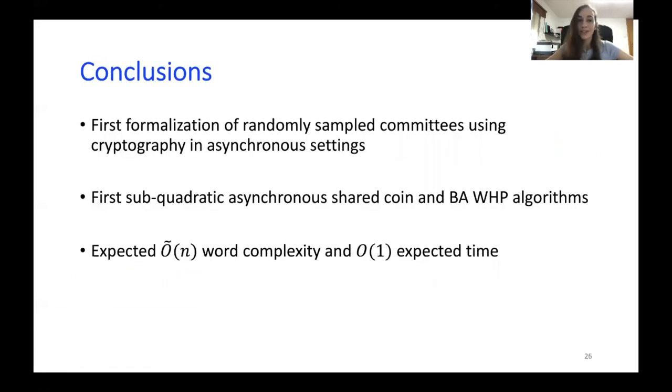So just to conclude the work, we provide the first formalization of randomly sampled committees using cryptography in asynchronous settings. Then we use this technique of committee sampling to present the first subquadratic asynchronous Byzantine agreement that works with high probability. And it achieves expected O tilde of n word complexity in constant expected time. And that's it. Thank you very much for listening.